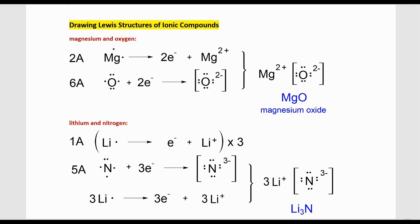Let's take an example of a compound in which magnesium forms with oxygen. We look up the group number of the representative element on the periodic table. Magnesium is in group 2A, so it has two valence electrons. Representative element metals want to empty the valence shell to become isoelectronic with the nearest noble gas, so magnesium releases two electrons and forms an Mg²⁺ ion.